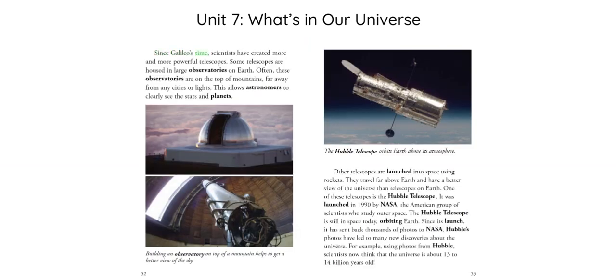Since Galileo's time, scientists have created more and more powerful telescopes. Some telescopes are housed in large observatories on Earth. Often, these observatories are on the top of mountains, far away from any cities or lights. This allows astronomers to clearly see the stars and planets.